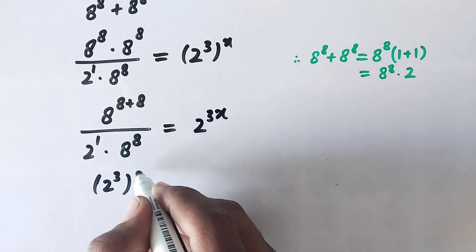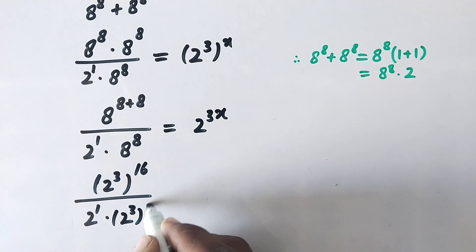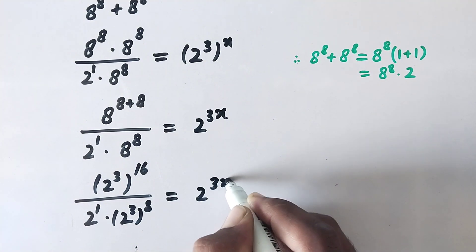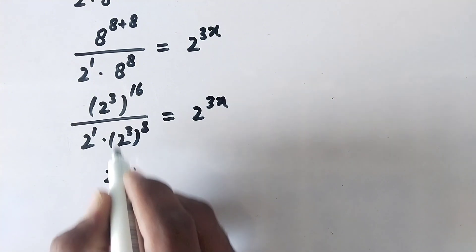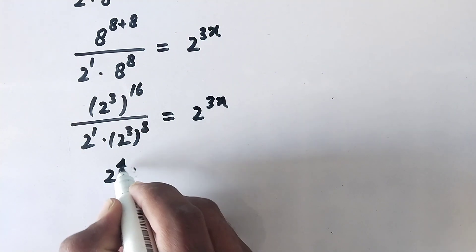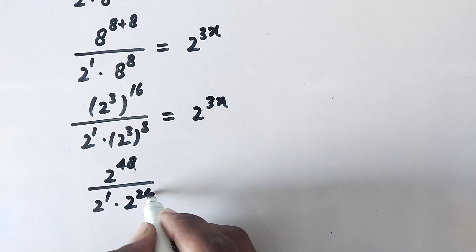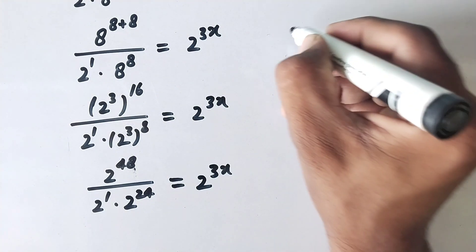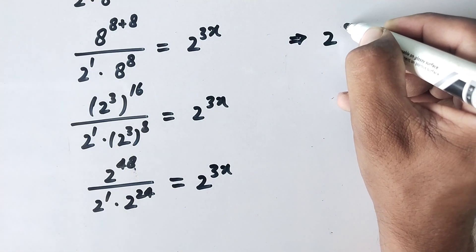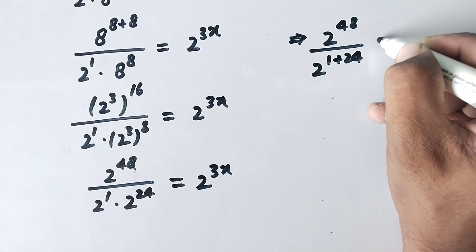Then the power is 8 plus 8 which is 16, divided by 2 to power 1 times 2 cubed to power 8, equal to 2 to power 3x. In the numerator, 2 to power 3 times 16 equals 48. In the denominator, 2 to power 1 times 2 to power 3 times 8, which is 24, gives 2 to power 3x.